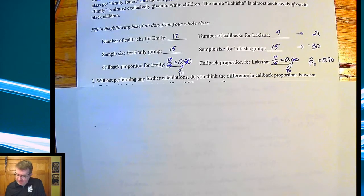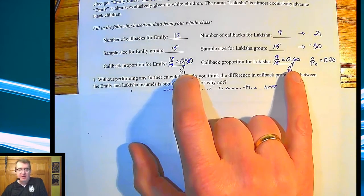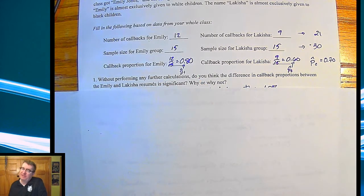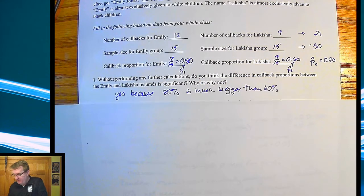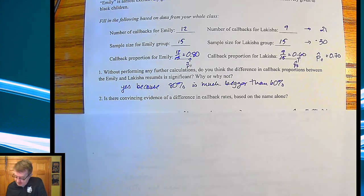Now, without performing any other calculations, do you think the difference of callbacks of difference of proportions was significant? So we have 80% for Emily, 60% for Lakeisha. Yeah, 20% is pretty big. I mean, 4 or 5%, it could happen. 20%, yeah, it's a lot bigger. So what we're going to do is we're going to run a significance test. So here is, is there convincing evidence of the difference of callback rates? Whenever you see that, when you're asked to find convincing evidence, that means that you are trying to find a test and you're going to have to run a test.